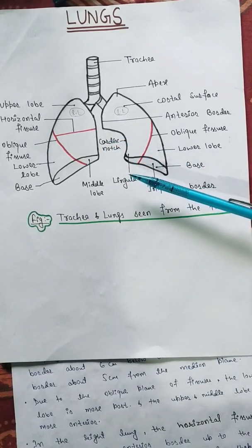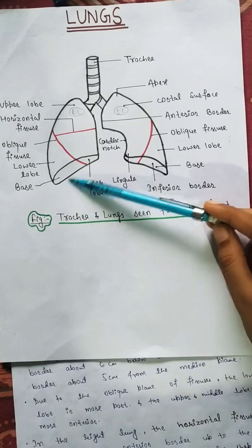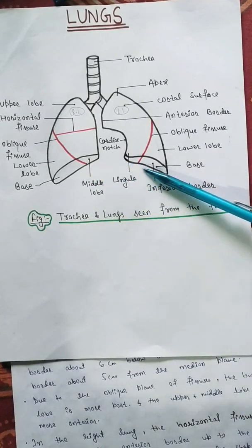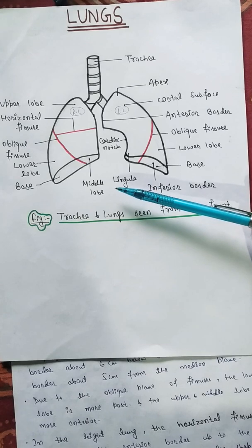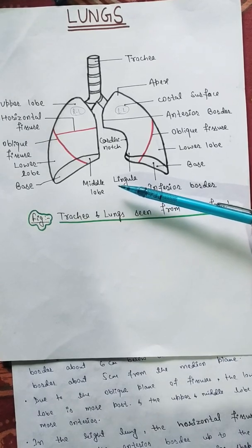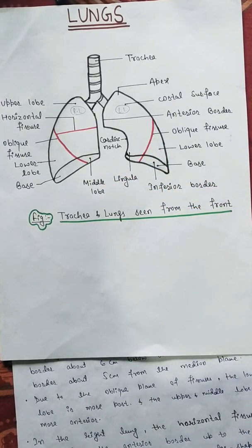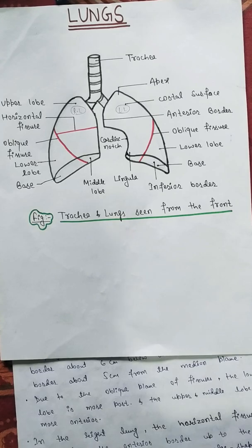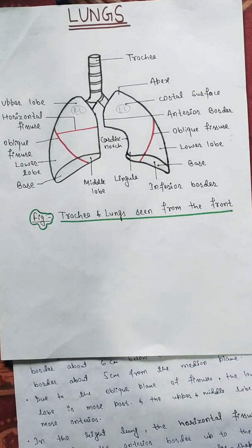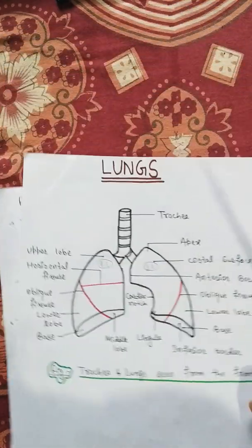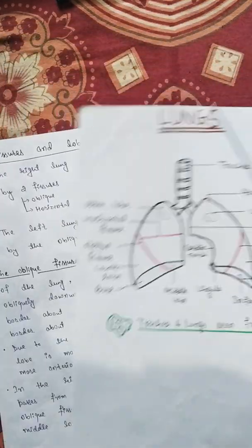The lungs expand maximally in the inferior direction because movements of the thoracic wall and diaphragm are maximal towards the base of the lungs. The presence of the oblique fissure in each lung allows more uniform expansion of the whole lung.